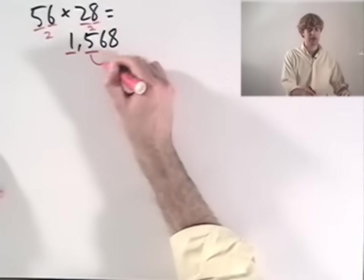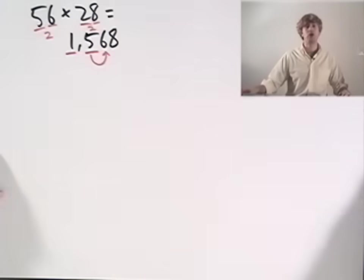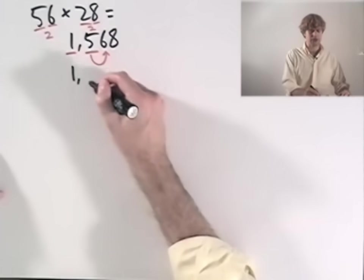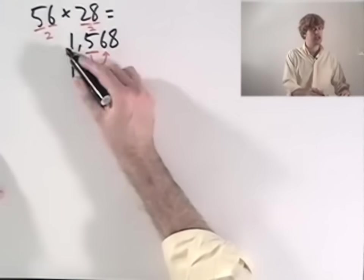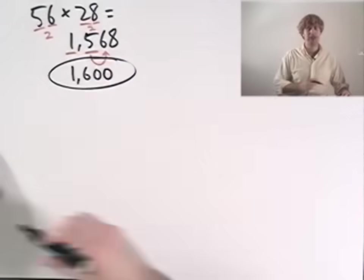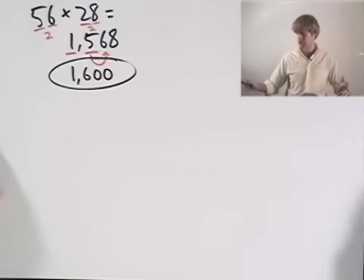This one stays and this one stays. And I look to the right of it to decide whether I round up or down. It's a 6 so I round up. My final answer becomes 1,600 because these two numbers stay and I just fill everything else in with zeros. So I get 1,600.